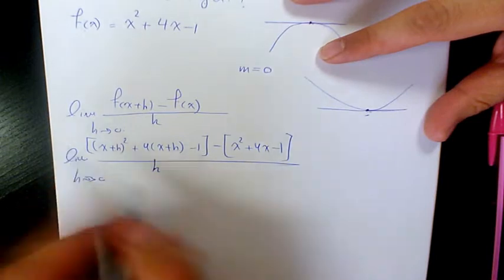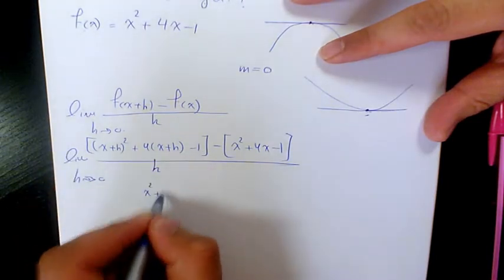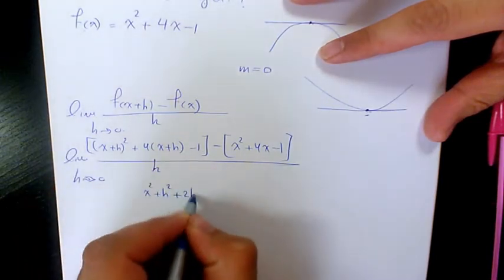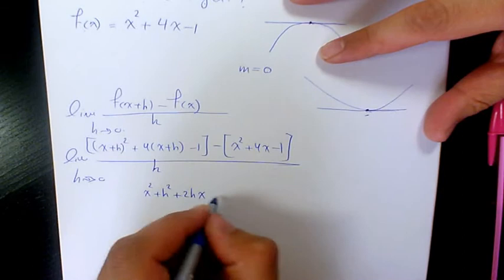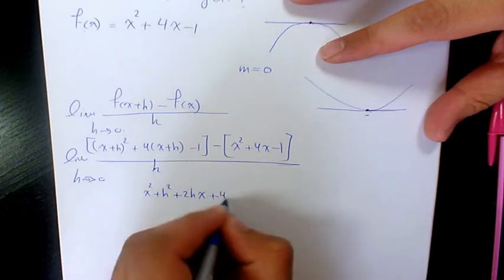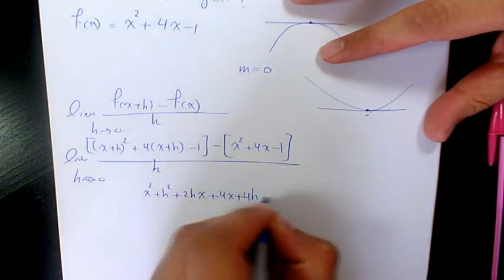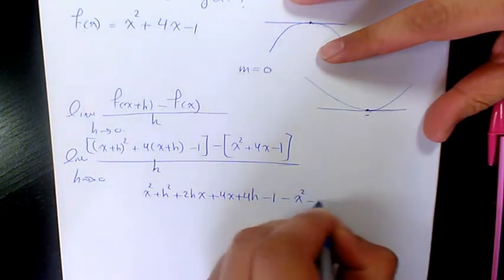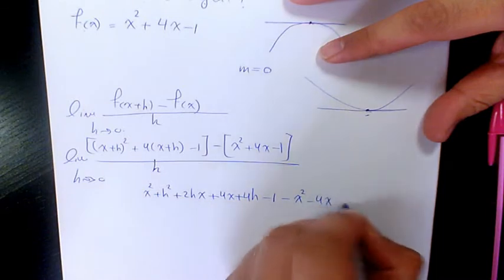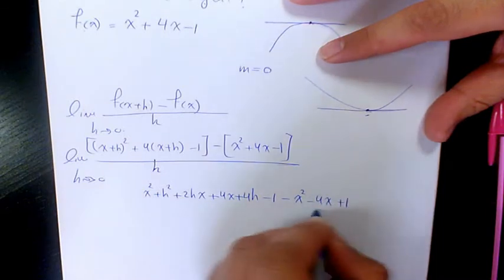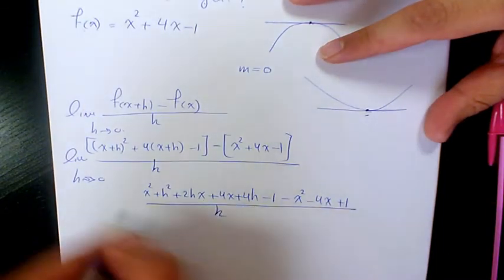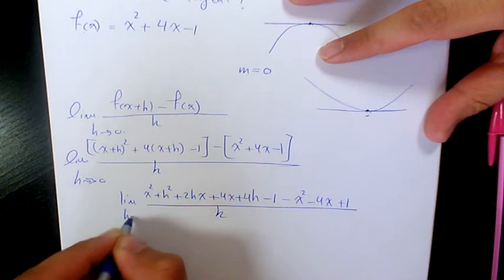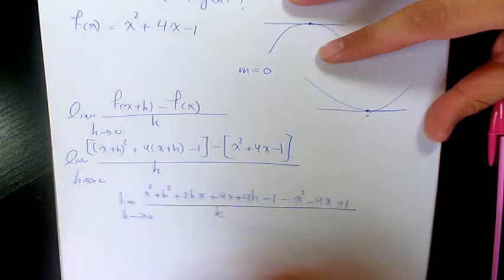When you expand it, it's going to be x² + h² + 2hx + 4x + 4h - 1, minus x² - 4x + 1, divided by h, when h approaches 0.